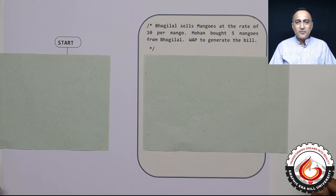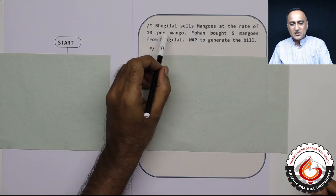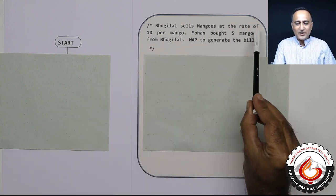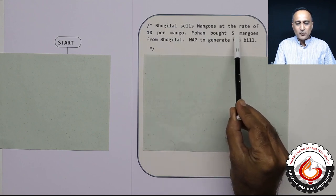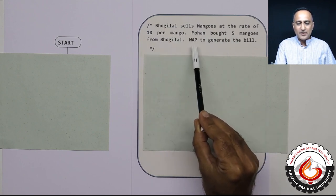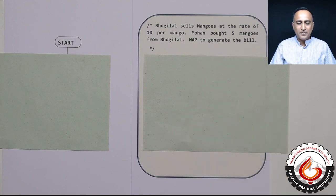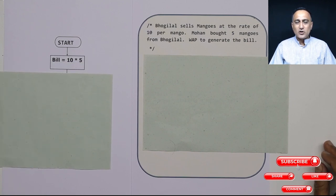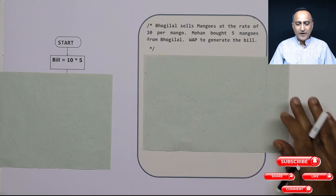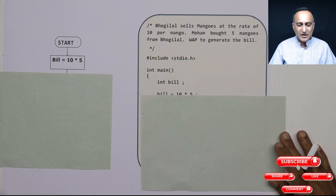The first problem which sir solved was: Mr. Bugilal sells mangoes at the rate of 10 per mango, Mohan bought 5 mangoes from Mr. Bugilal, write a program to generate the bill. This is quite simple because the cost per mango is given and the total number of mangoes. In the flowchart, bill is simply cost per mango into 5. So let's see what is happening in the program.